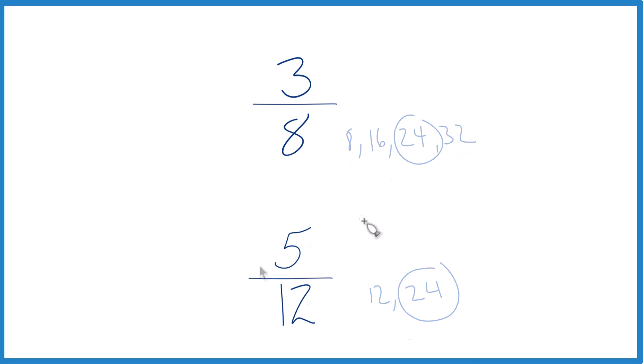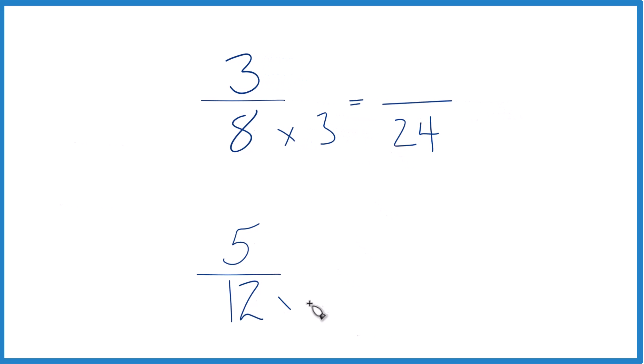So let's use that. We know that 8 times 3, that's going to equal 24. Then down here, 12 times 2, that equals 24 as well. So now we have the same denominator. Once we get the numerator, we can just compare those to figure out whether 3/8 is larger than 5/12.